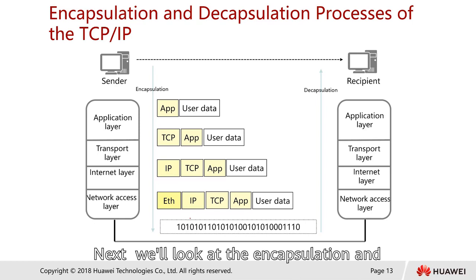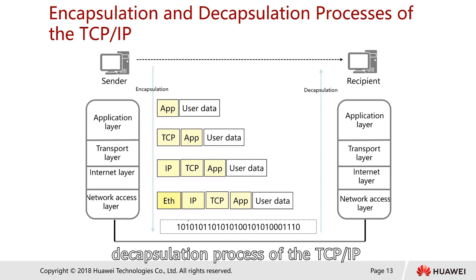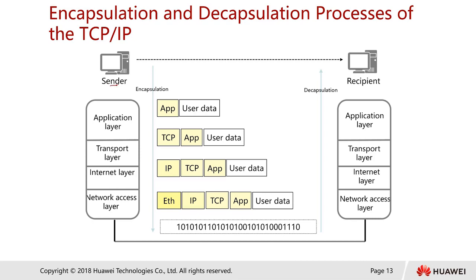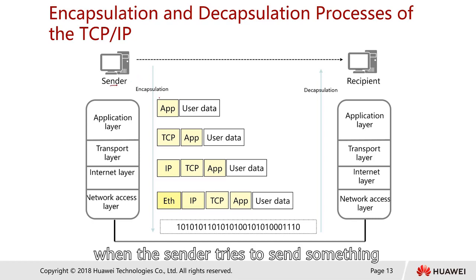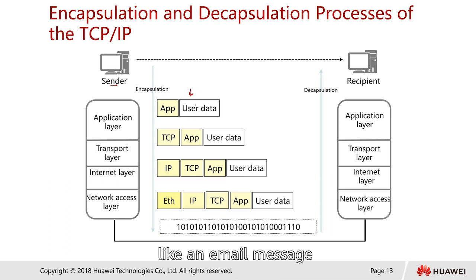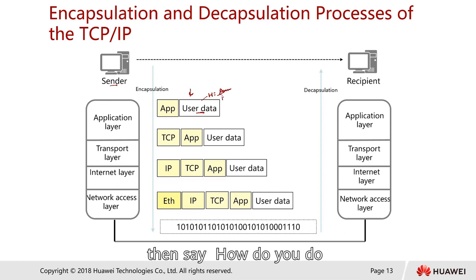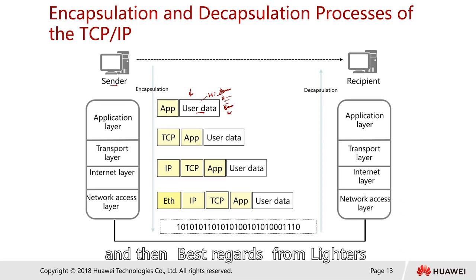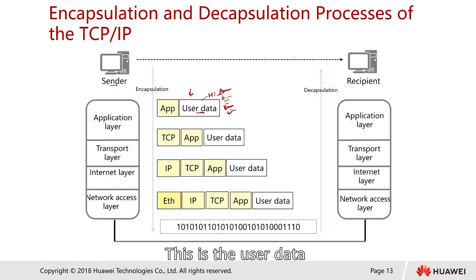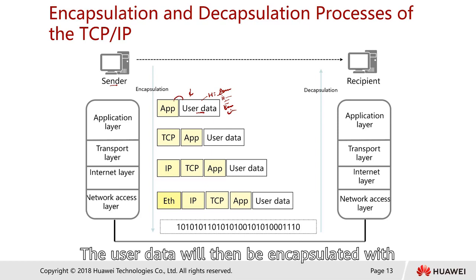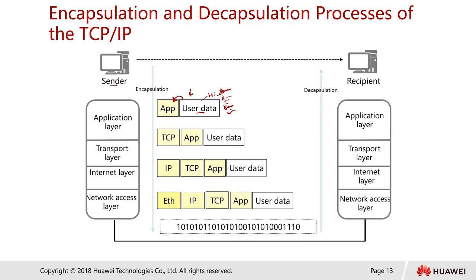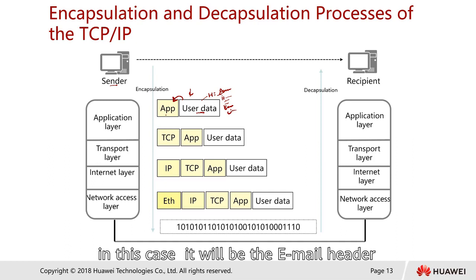Next, let's look at the encapsulation and decapsulation process of TCP/IP. This is the sender. When the sender tries to send something like an email message, this is called user data. For example, you type the email body. This user data is then encapsulated with an application header — in this case the email header — and transmitted to the next layer, the transport layer.